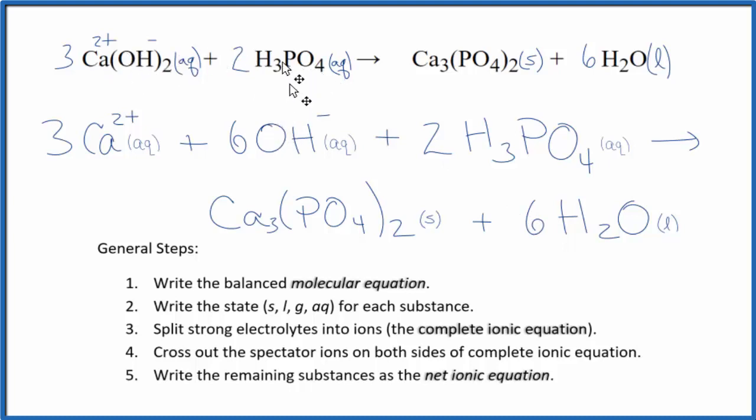The key here to remember is this phosphoric acid, although it's going to dissolve in the water, it won't split apart very much. And because of that, it's a weak electrolyte. And we leave this together. We don't split it apart into its ions. The other thing you need to remember is calcium phosphate. That's insoluble. And because of that, we're not going to split it apart into its ions either.